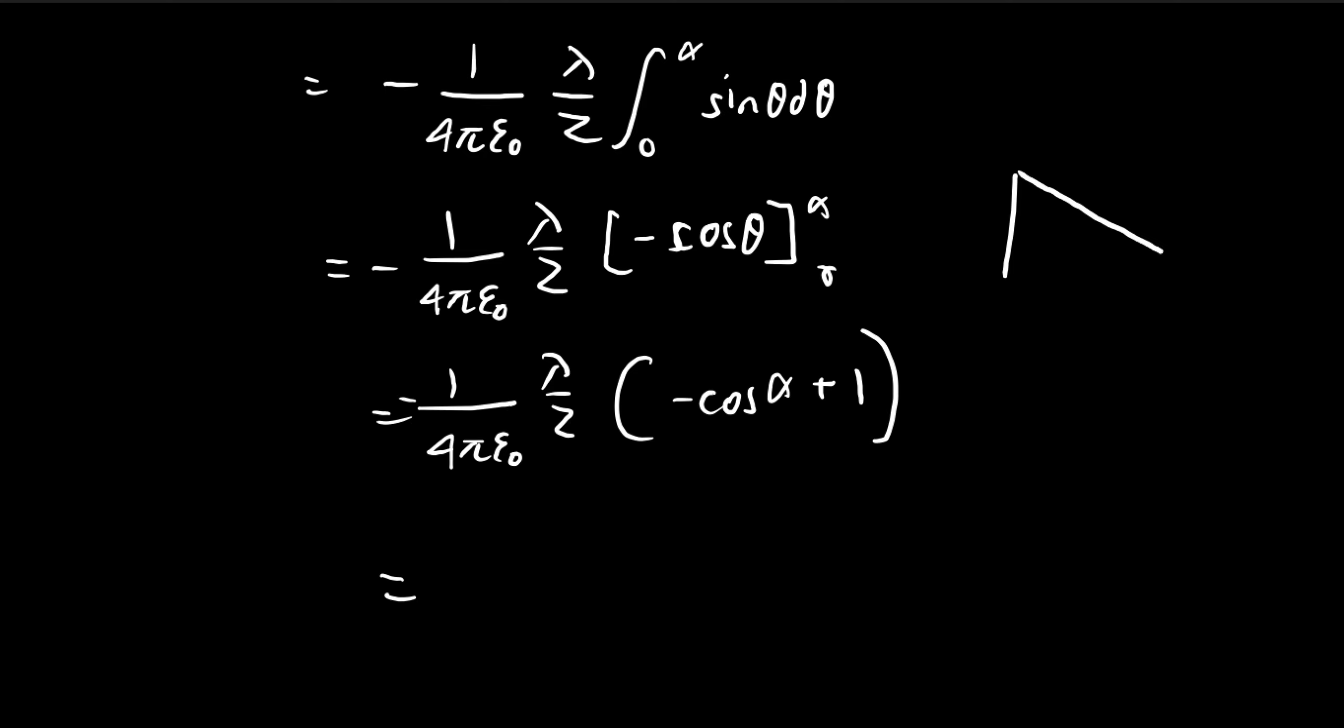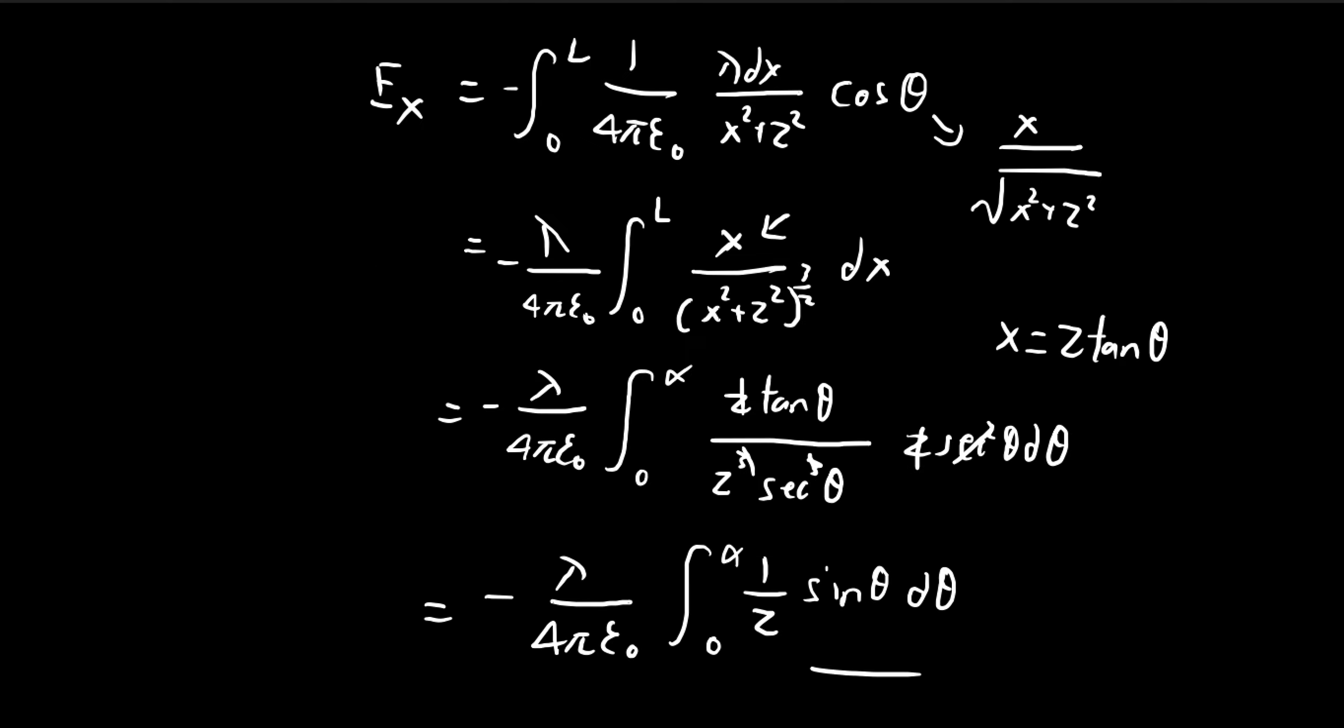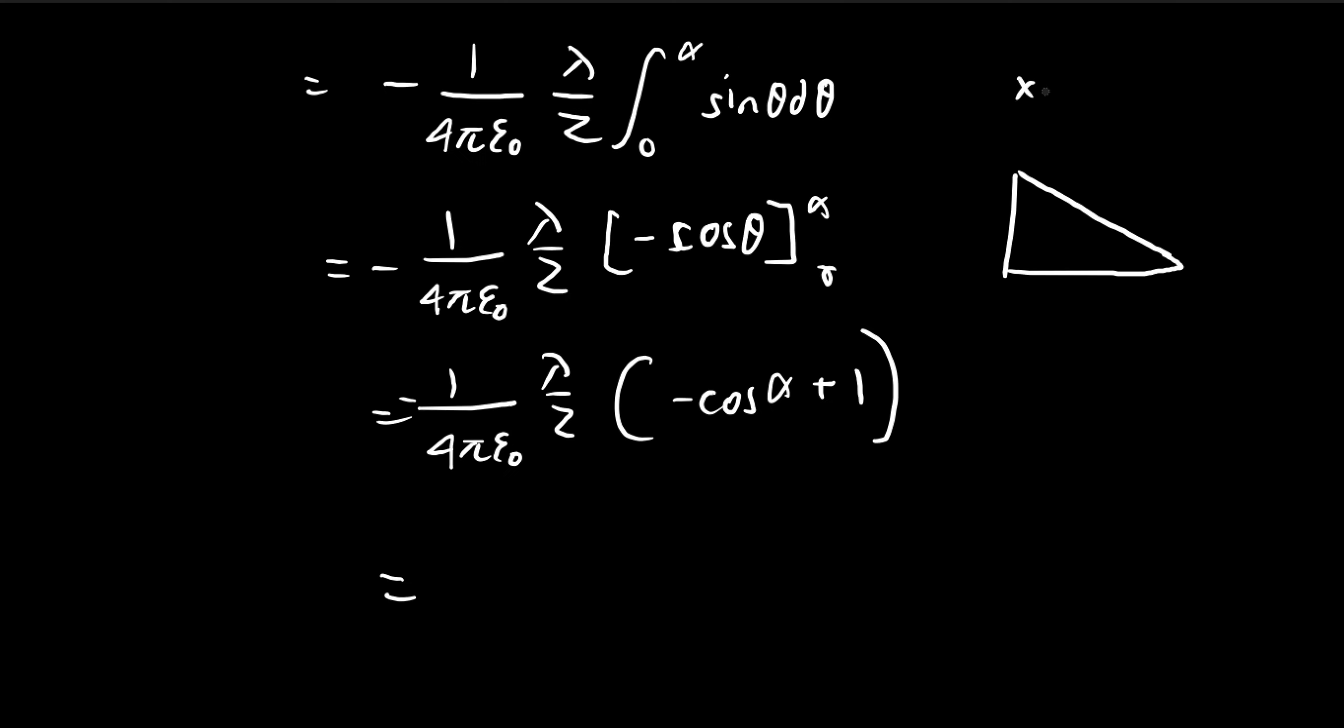And then what is cosine of alpha? So we can just draw the triangle again. So alpha is such that L over z is going to be equal to tangent of alpha. So in that case, cosine of alpha is going to be equal to z divided by this length, square root of z squared plus L squared. So there we have it. I'm just going to move the negative sign inside, so we get z divided by square root of z squared plus L squared minus 1.